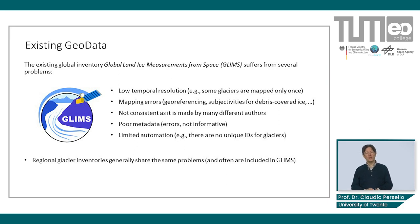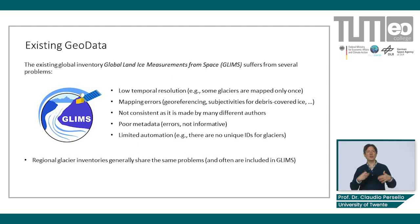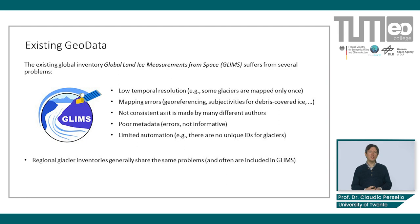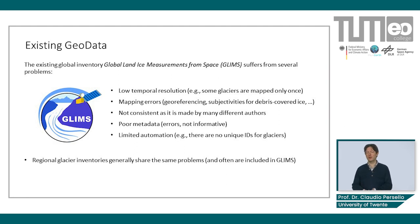However, the dataset suffers from several problems. It is sparse in time — that is, some glaciers are mapped only once — which does not allow us to monitor changes over time consistently. The outlines are manually digitized by glaciologists, a process which is prone to errors and subjective interpretations. Moreover, metadata is often incomplete or inaccurate.